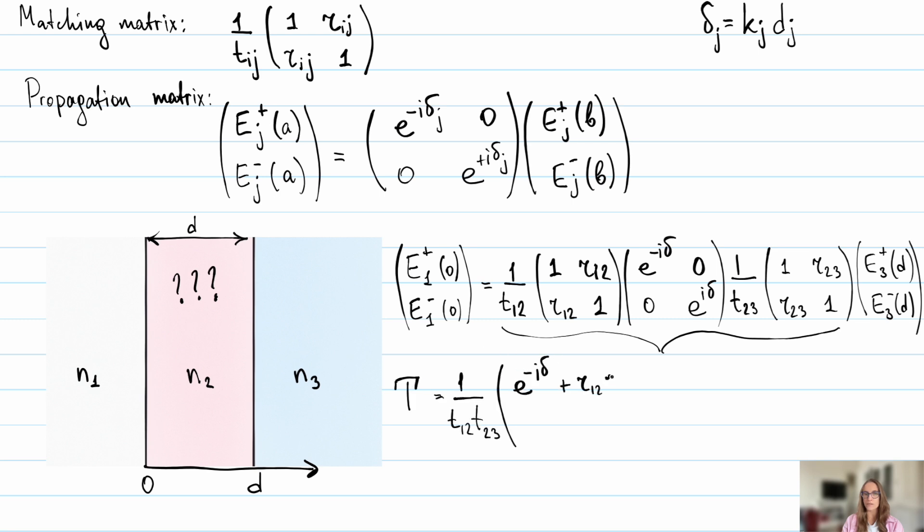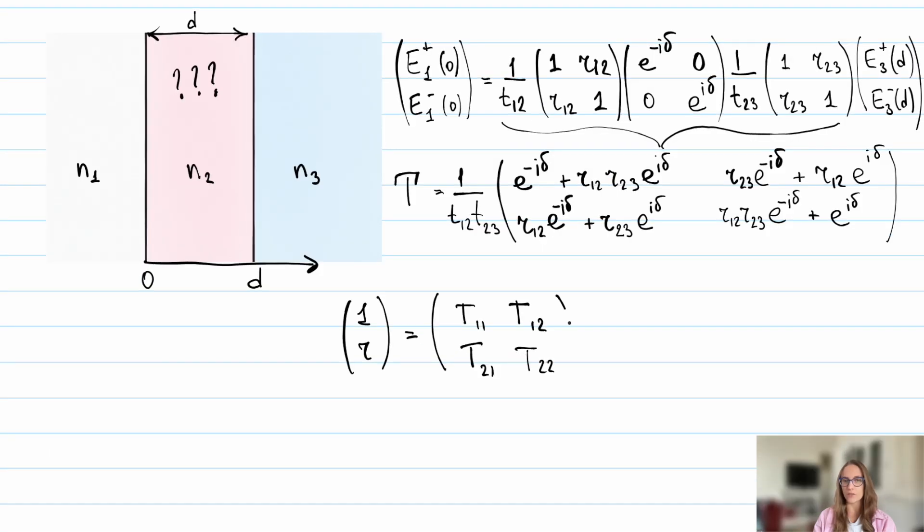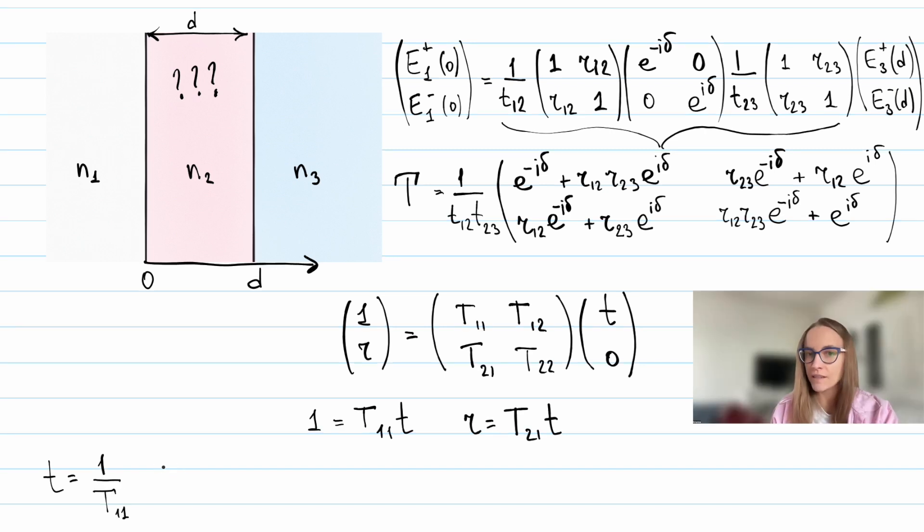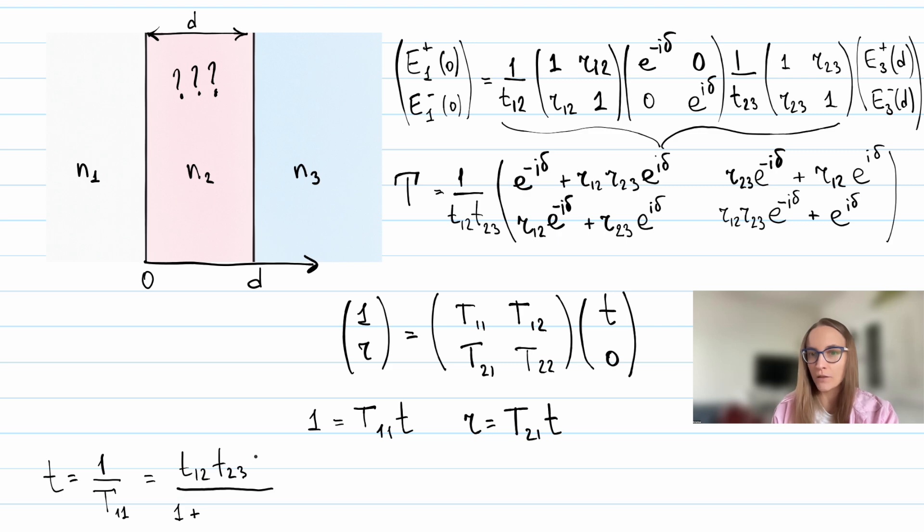Let's go through these simple calculations and obtain the resulting transfer matrix. To find the reflection and transmission, we assume there is no wave coming in from region 3, so we set the component to zero. Then we easily get the expression for transmission, which is 1 over T11, and reflection, which is T21 over T11.